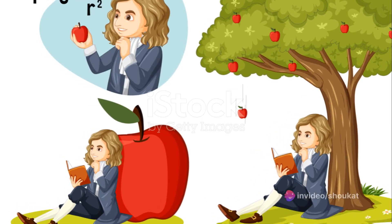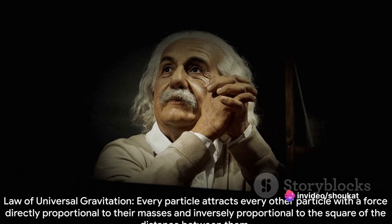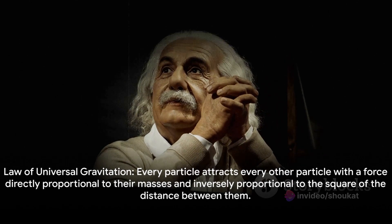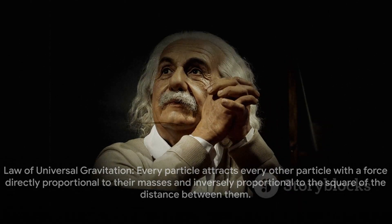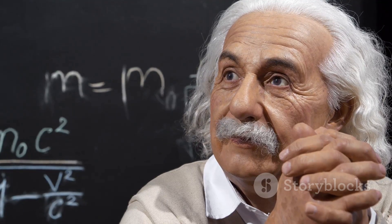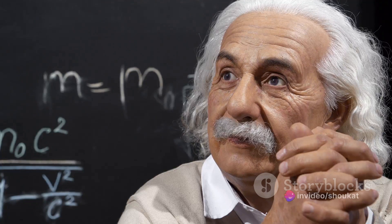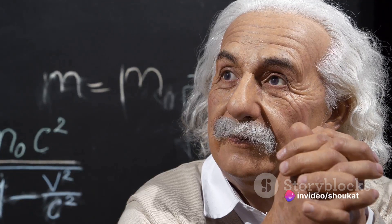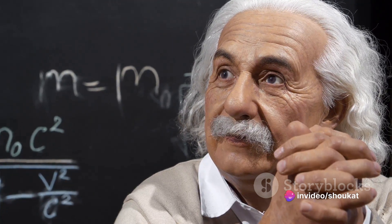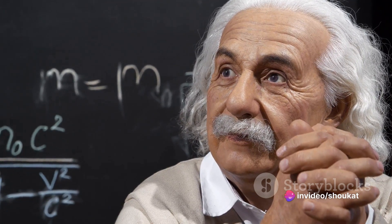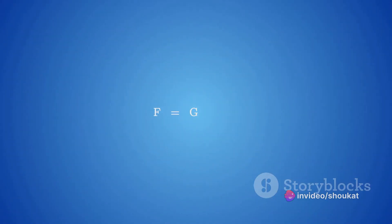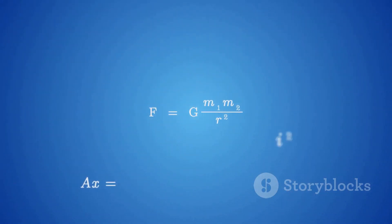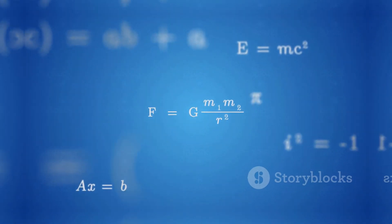In the 17th century, Sir Isaac Newton formulated the law of universal gravitation, which states that every particle of matter in the universe attracts every other particle with a force that is directly proportional to the product of their masses, and inversely proportional to the square of the distance between their centers. This law is still used today to calculate the gravitational force between objects.